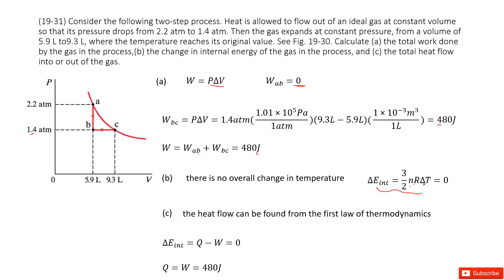And then we look at the delta T. Does the temperature change? No, because it tells us the temperature reaches its initial value. So from A to C the temperature is the same. So delta T, the temperature change, is zero. That makes the change in internal energy zero.